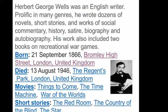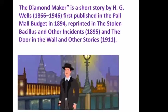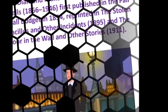This story, 'The Diamond Maker,' written by HG Wells, who was born in 1866 and died in 1946, was first published in the Pall Mall Budget in 1894. It was reprinted in 'The Stolen Bacillus and Other Incidents' in 1895 and 'The Door in the Wall and Other Stories' in 1911.